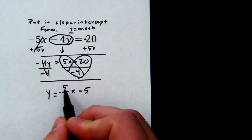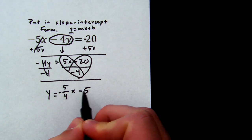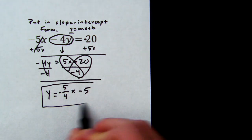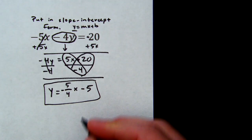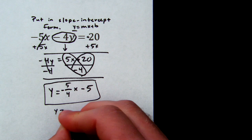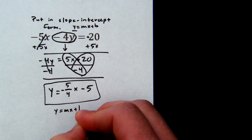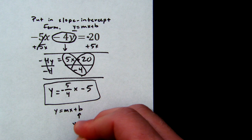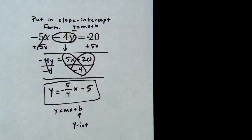y = -5/4x - 5. That is our equation. Now, on the next question, it asks you to find, and here's our slope-intercept form, the y-intercept, which is going to be b. This is for the next question.